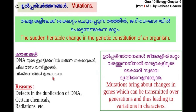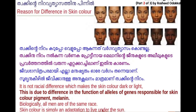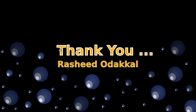Mutation, a sudden inheritable change in the genetic constitution of an organism, brings about changes in genes which can be transmitted over generations and leads to evolutionary changes too. The rise or fall in the production of melanin is due to differences in the function of alleles of genes responsible for skin color. This is the reason for the color difference of human skin — it is not racial difference, but simply an adaptation to live under the sun. Thank you.